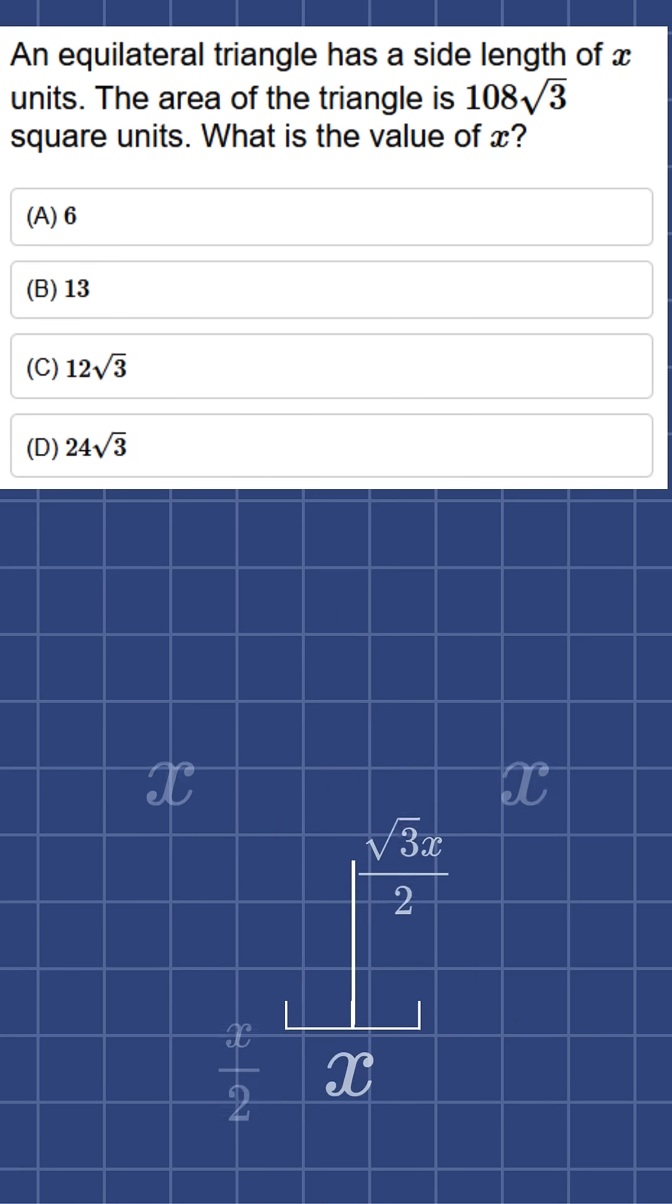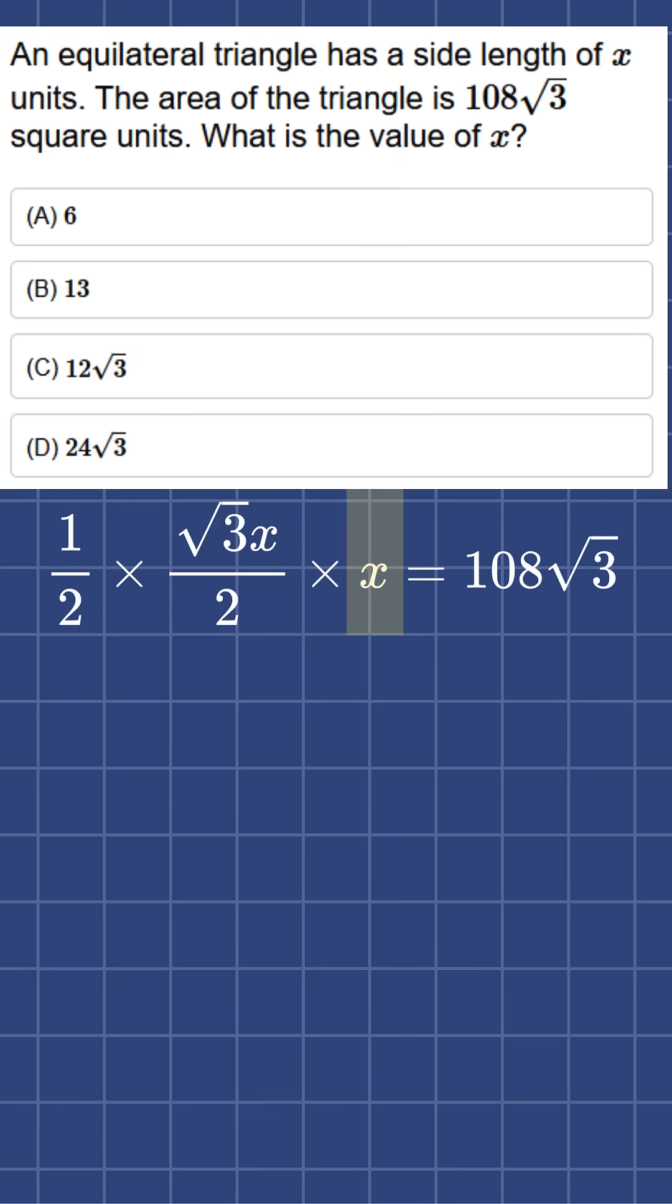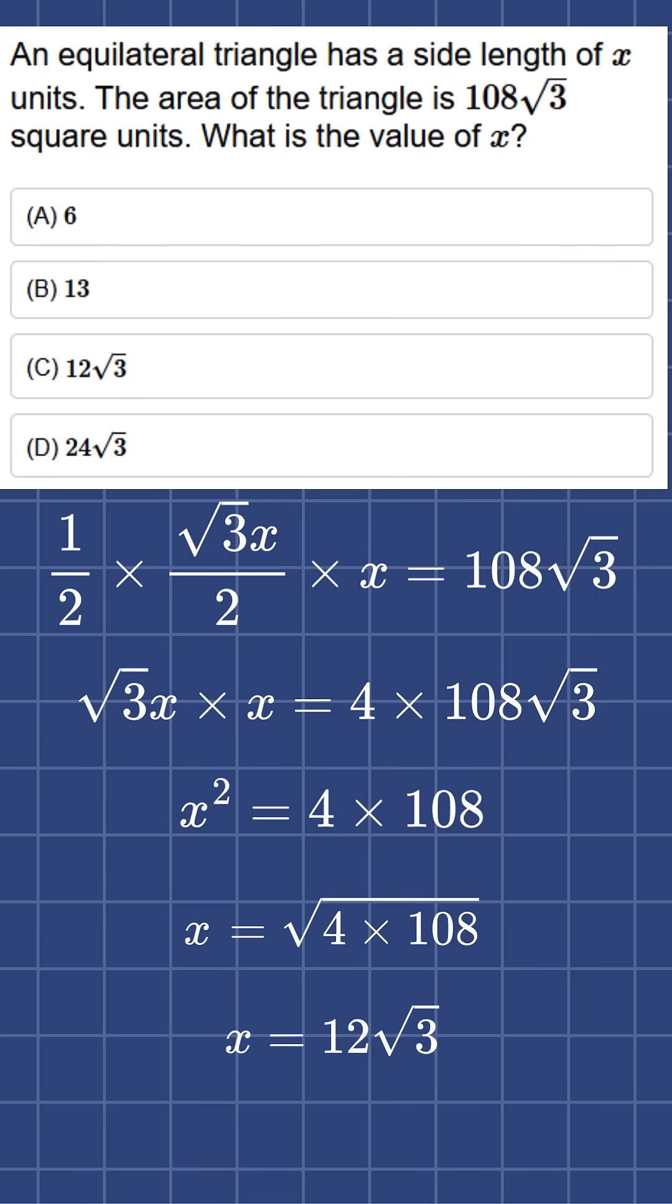Now we can work backwards from the area to find x. 1 half times the height times the base equals our area of 108 square root 3. We solve for x by multiplying by 4, dividing by square root 3, and taking the square root of both sides. Our final answer is c. x equals 12 square root 3.